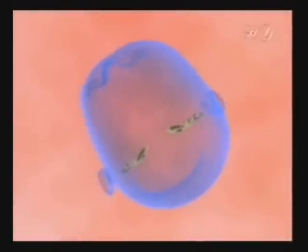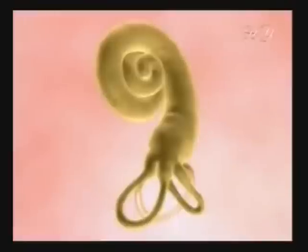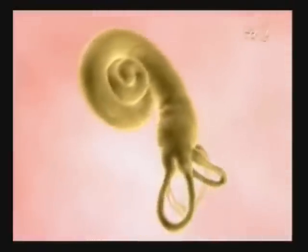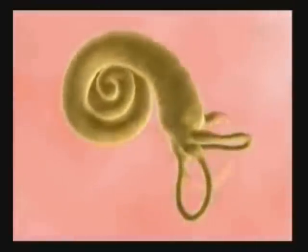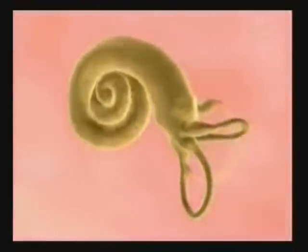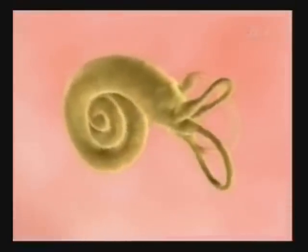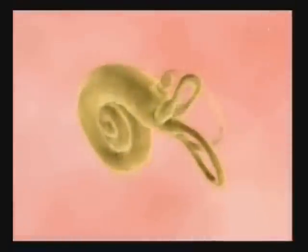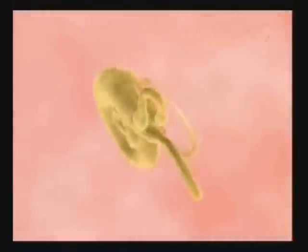The cochlea in the human inner ear serves to transmit sound vibrations. This bony structure filled with fluid has a logarithmic spiral shape, with a fixed angle of 73 degrees 43 minutes, containing the Golden Ratio.